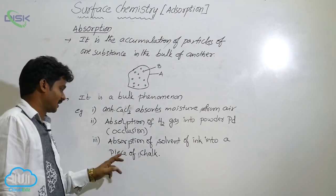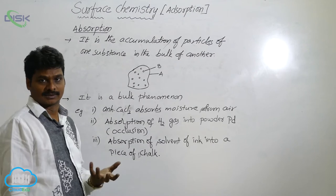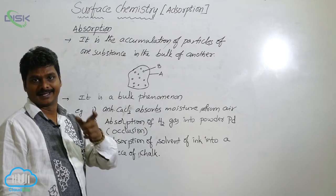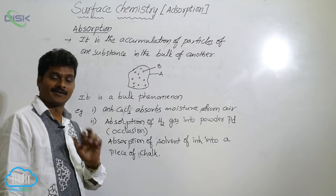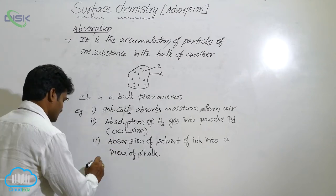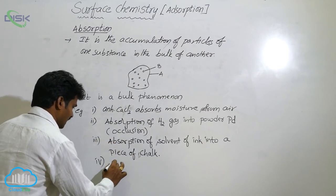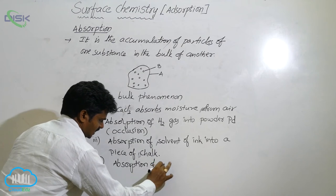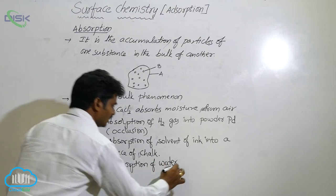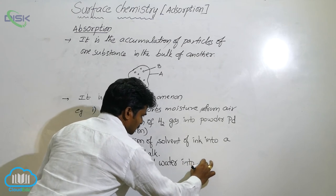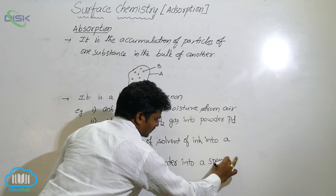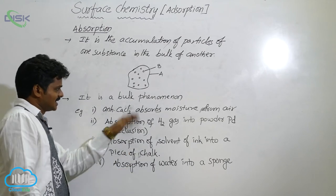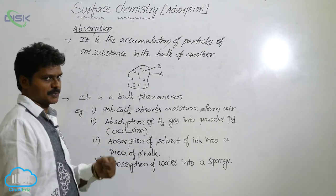In ink, the molecules causing color — the colored dye — are adsorbed, whereas the solvent of ink is absorbed into the chalk. Similarly, another example is absorption of water into a sponge. When a sponge is placed in water, it simply absorbs water. These are some examples of the absorption process.